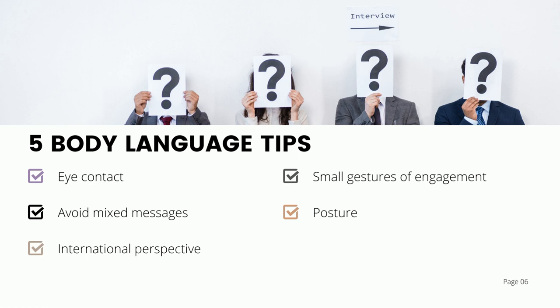The second tip is avoiding mixed messages. If you have crossed arms, if you're fidgeting, if you're not maintaining eye contact, if you're slouching — any mix of these different things can give mixed messages. As a human resources professional, you're really there to build trust, to be genuine, to be a point of contact for the administrators you're working for and the employees you're serving. You want to make sure you come across as trustworthy, and that's going to come across in an interview.